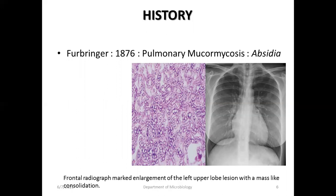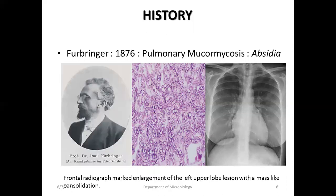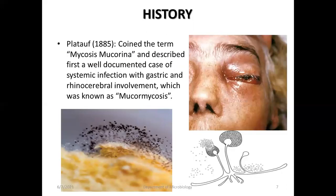In 1884, the pathogenicity of Mucorales was established in rabbits, describing two species: Mucor rhizopodiformis and Rhizopus. Furbringer in 1876 described the first case of pulmonary mucormycosis. In 1885, Platthoff coined the term mycosis mucorina and described the first well-documented case of systemic infection with gastric and rhinocerebral involvement, which became known as mucormycosis.